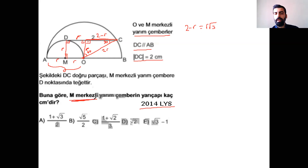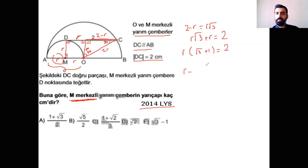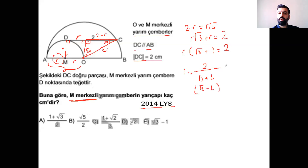R'yi karşı atarsam: R√3 + R = 2, yani R(√3 + 1) = 2. O zaman R = 2/(√3 + 1). Bu şıklarda yok, o yüzden eşlenik çarpımı yapıyorum: (√3 - 1) ile genişletiyorum. Yukarısı 2(√3 - 1), aşağısı (√3)² - 1² = 3 - 1 = 2. R'nin kendisi elimize √3 - 1 şeklinde kalmış oldu. Güzel soru.